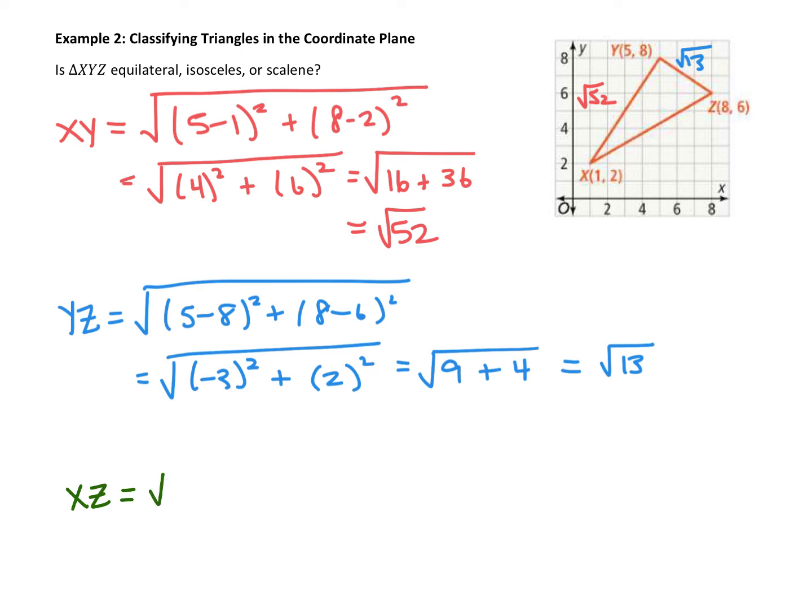We have the square root of, I'm going to subtract the x's from X and Z. So 8 minus 1, plus subtract the y's, 6 minus 2, squared. Square root of 8 minus 1 is 7. 6 minus 2 is 4. So we did the subtraction inside the parentheses first.